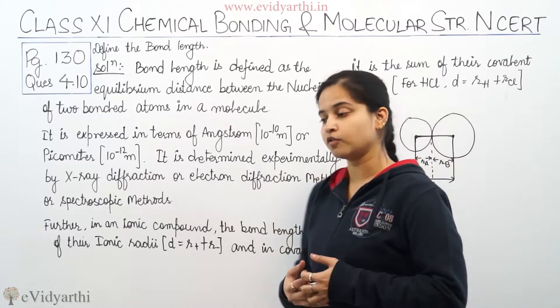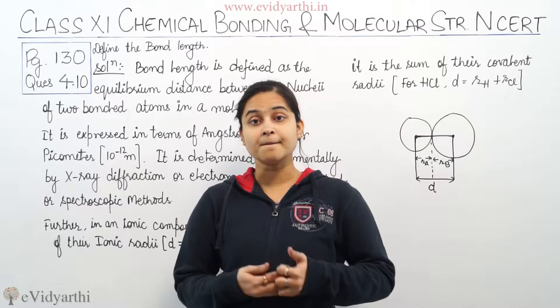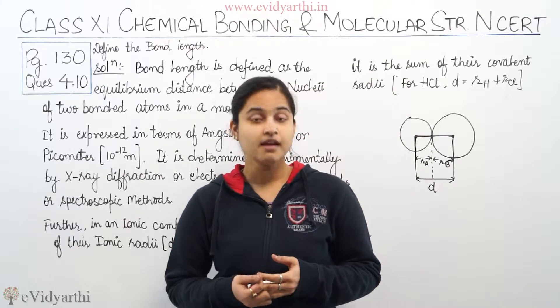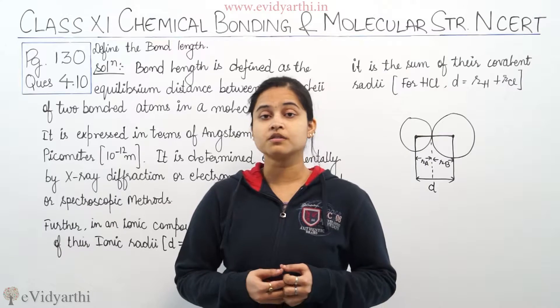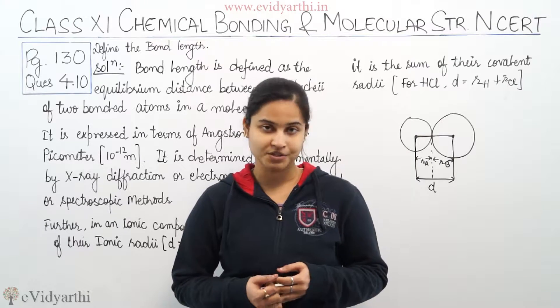Now further in ionic compound, the bond length is the sum of the ionic radii and in the covalent compounds, the bond length is the sum of their covalent radii.